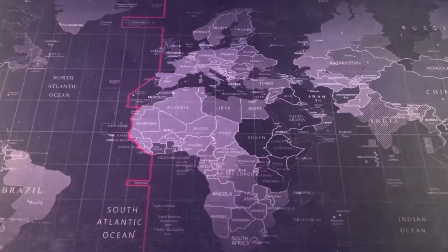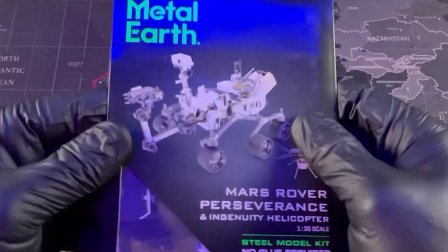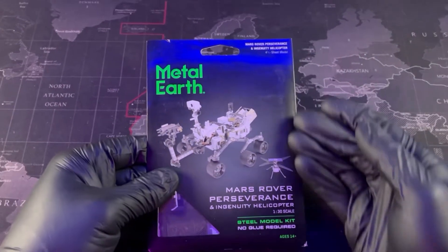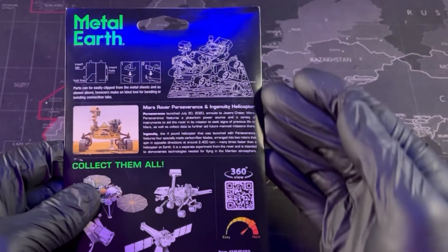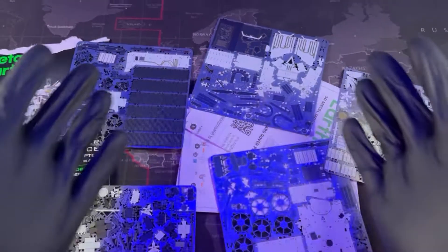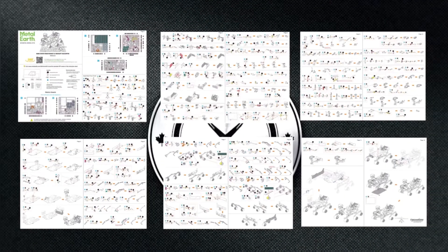And boom, there we have it. All 11 pages needed to complete our Mars Rover Perseverance and Ingenuity Helicopter. These instructions look intense, and that's because they are. But don't worry, it's only rocket surgery. Or I should say rover surgery. Anyway, let's take a closer look.